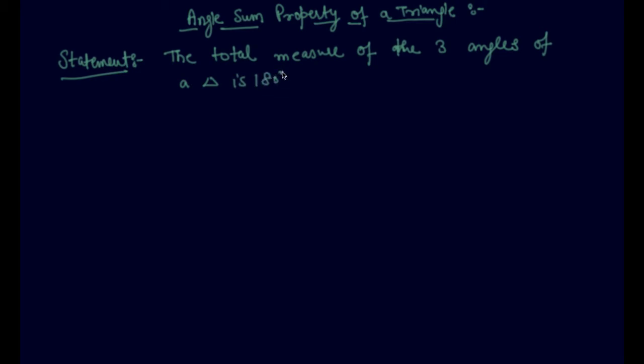This is the statement of the angle sum property. Let me draw a triangle first. Let us say this is a, this is b and this is c.